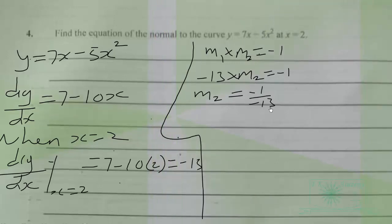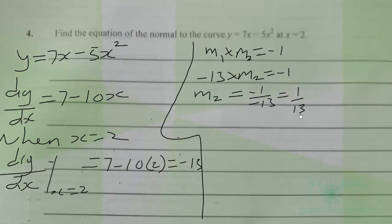So the gradient of the normal equals negative 1 over negative 13, which is 1 over 13. Now that we have the gradient of the normal, we find the point. At x equal to 2: